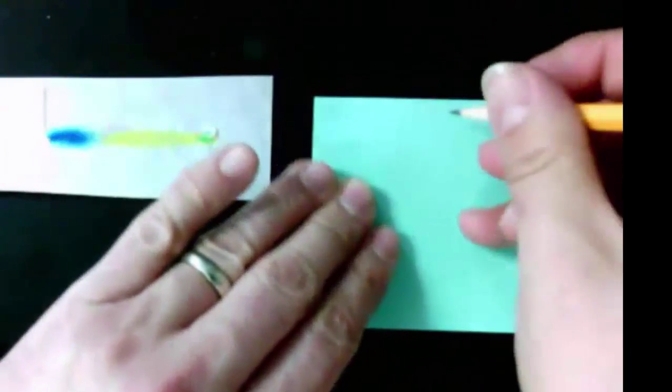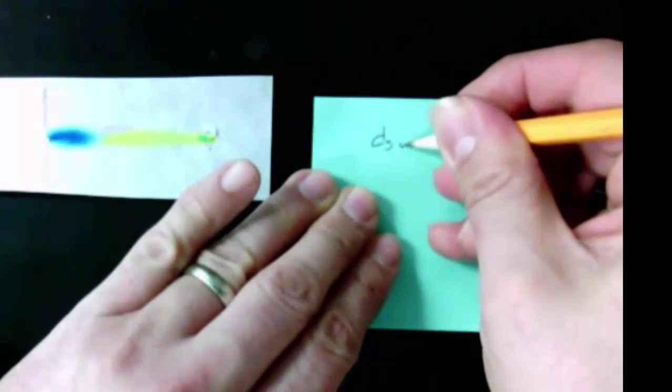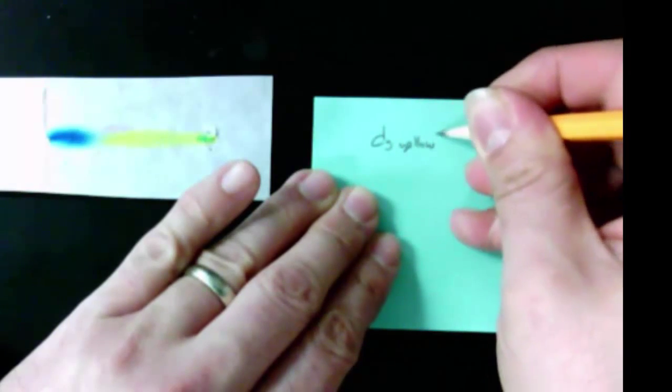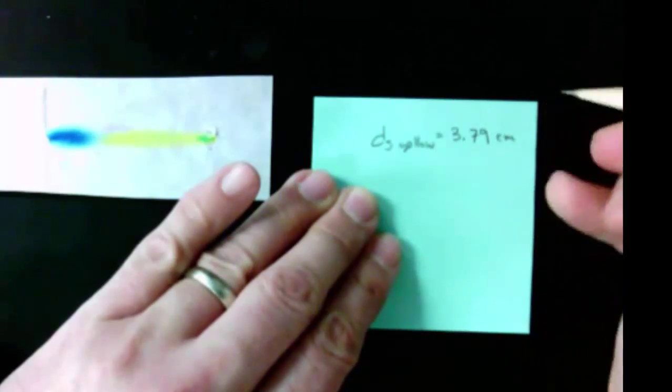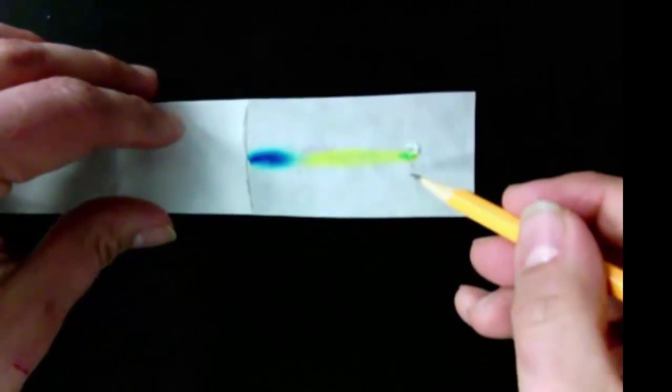So that's called the ds for the yellow. Let's write that down. ds for the yellow was 3.79 centimeters. Now, the next one I'm going to measure is the ds for the blue.